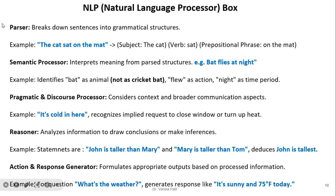Natural language processor components: the parser breaks down the sentence into grammatical structure — for example, in 'the cat sat on the mat', the subject is 'the cat', the verb is 'sat', and the prepositional phrase is 'on the mat'. The semantic processor interprets meaning from the parsed structure — for example, in 'bat flies at night', it identifies 'bat' as an animal, 'flies' as an action, and 'night' as a time period.